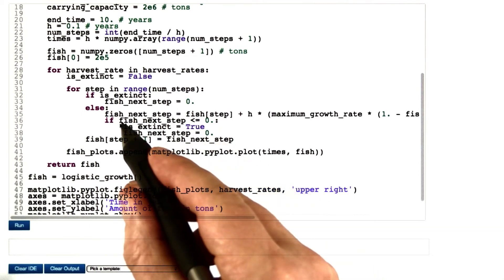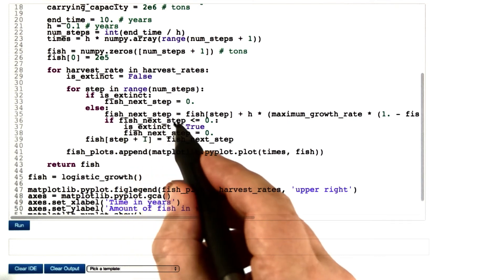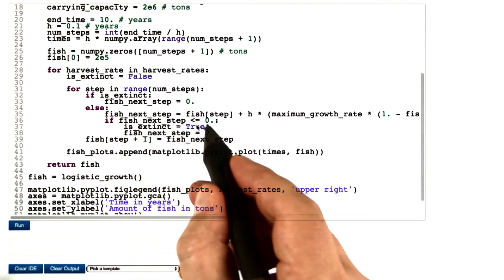Note that you cannot simply check whether the amount of fish for the next step is exactly equal to zero. That's probably not going to happen.